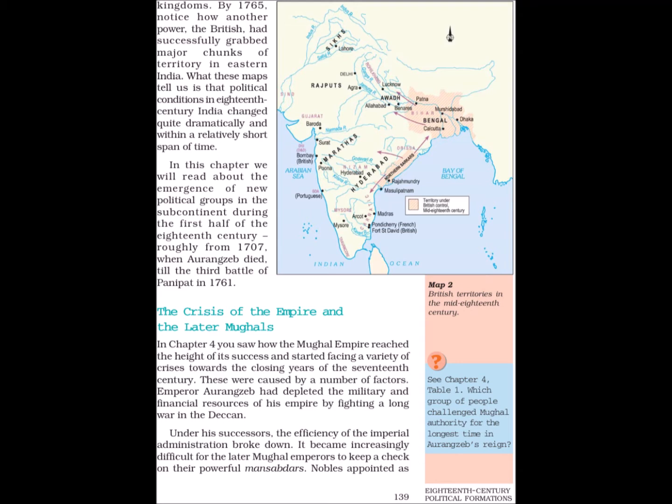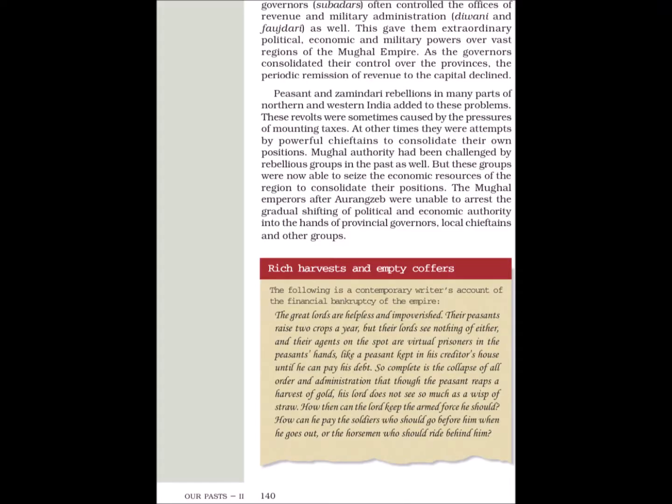It became increasingly difficult for the later Mughal emperors to keep a check on their powerful Mansabdars. Nobles appointed as governors, Subedars, often controlled the offices of revenue and military administration, Diwani and Fojtari as well. This gave them extraordinary political, economic and military powers over vast regions of the Mughal Empire. As the governors consolidated their control over the provinces, the periodic remission of revenue to the capital declined.